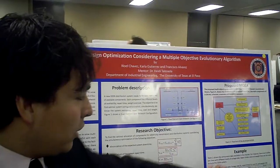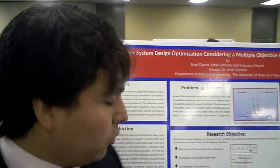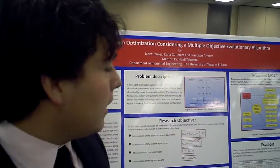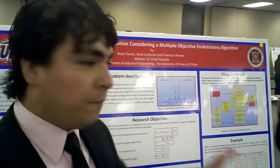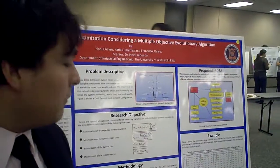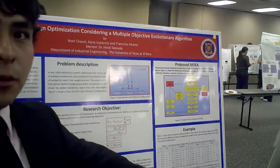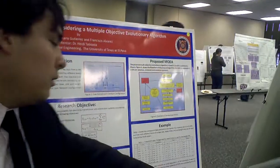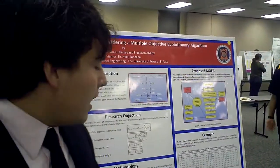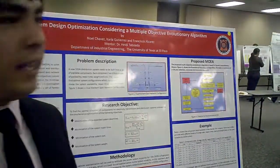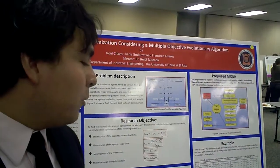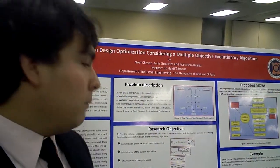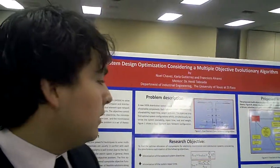We're going to use these values to form the chromosome and then use these formulas to get all the values we want. In this case, we developed 10 generations, and this is the Pareto front for the 10th generation. We have very good solutions, and we proved that this method can be used to allocate components correctly, minimizing all these objectives.